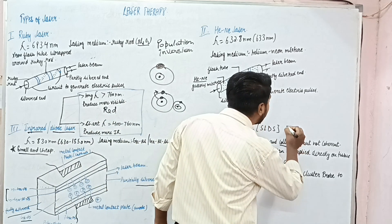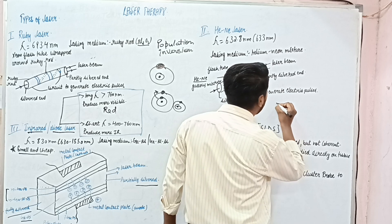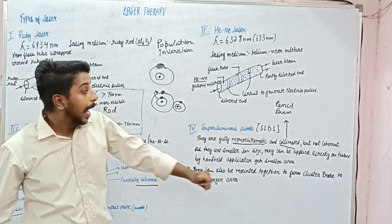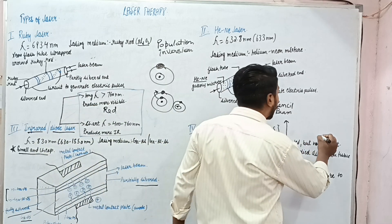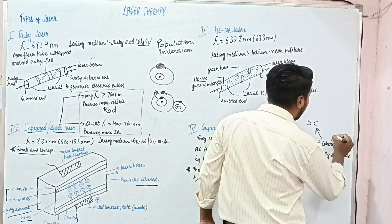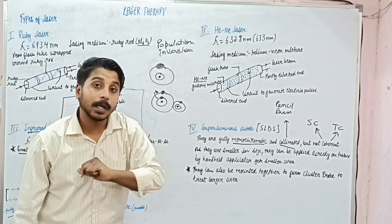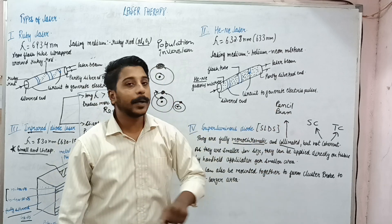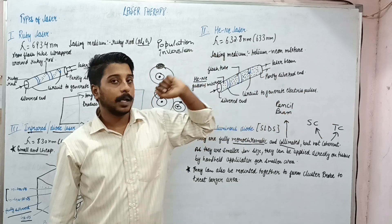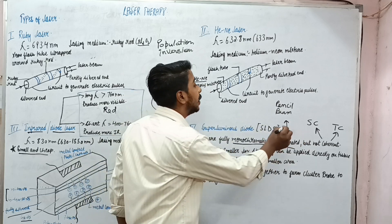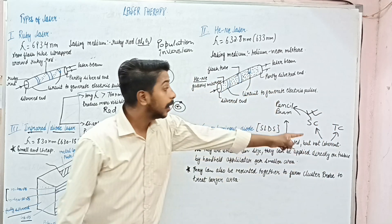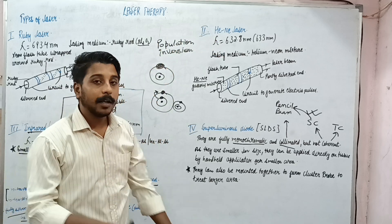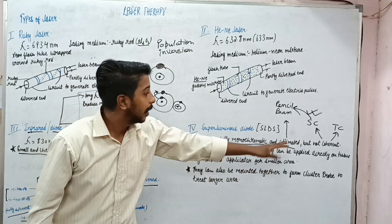Collimated means the wave transmits in a straight direction — that is, a pencil-like beam of laser is produced. Regarding coherence, there are two types: spatial coherence and temporal coherence. If you watched my previous lecture, you know that the property of collimation — the laser beam moving in a straight line as a pencil-like beam — is due to spatial coherence. However, temporal coherence, which means the peaks of electric and magnetic waves are at the same time and their fall is also at the same time — that is, they are in phase — this property is not present in the super luminous diode.